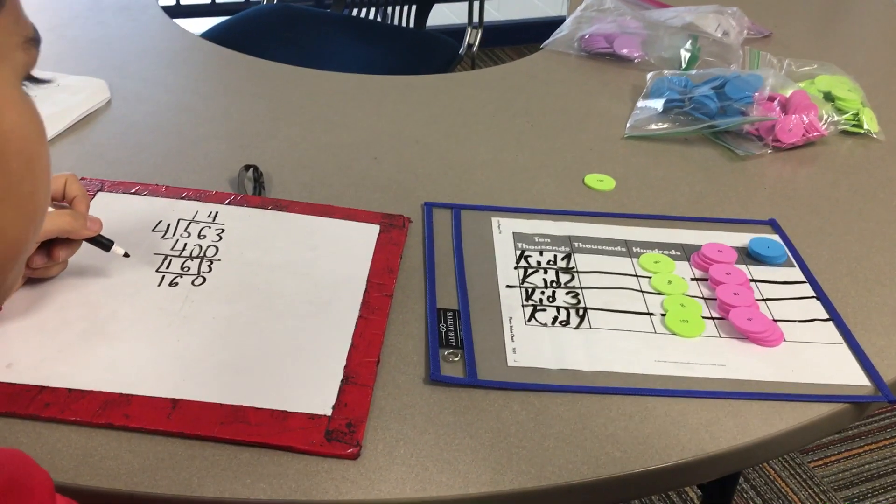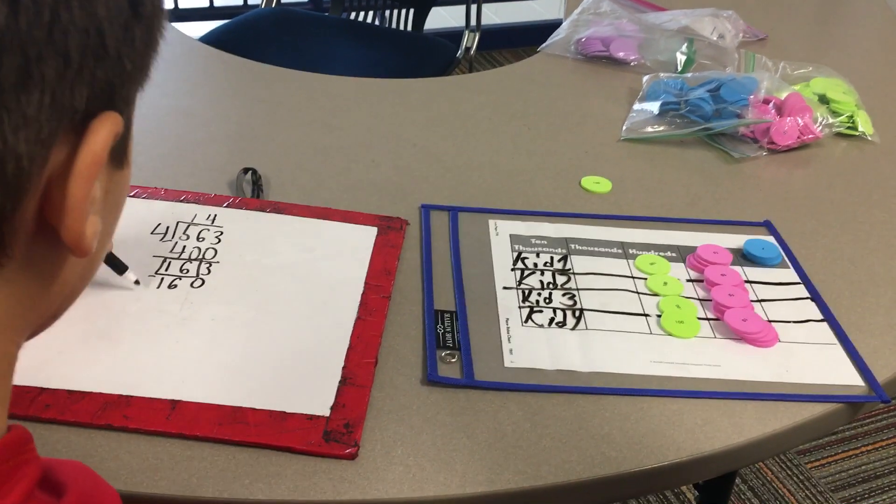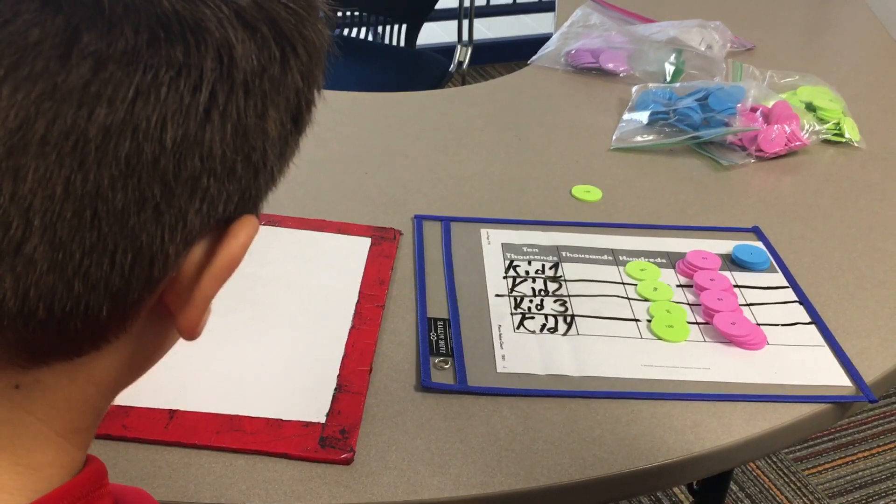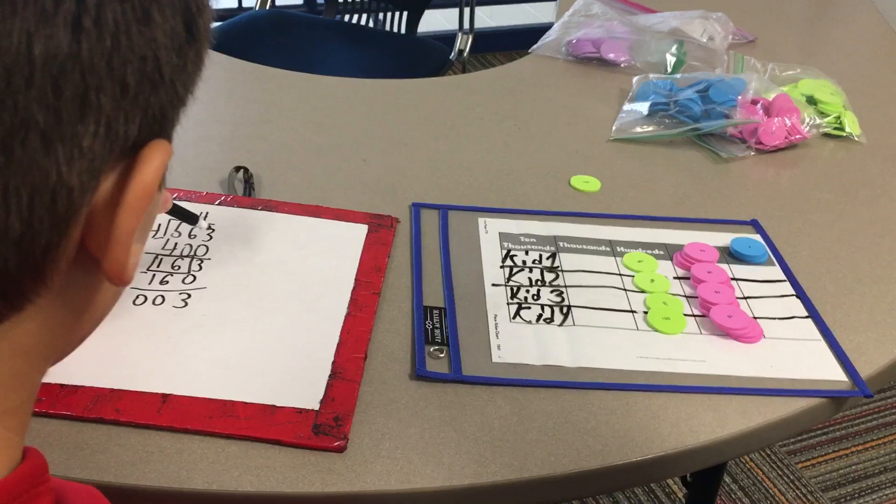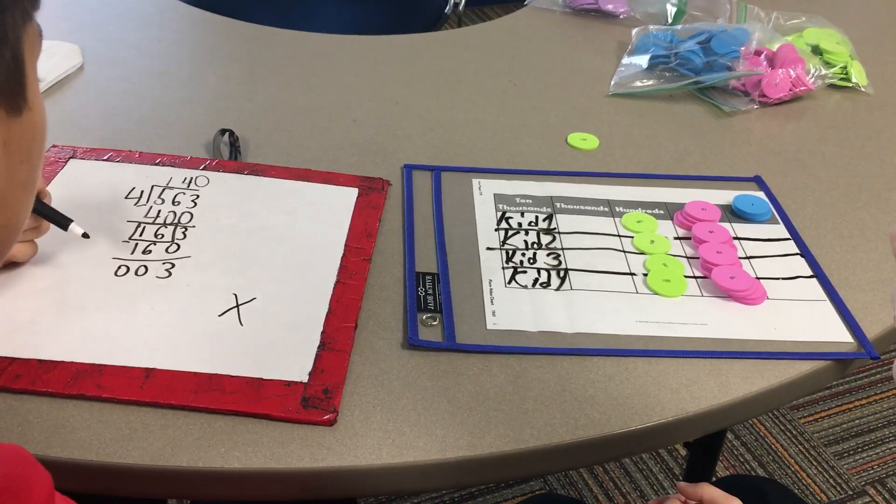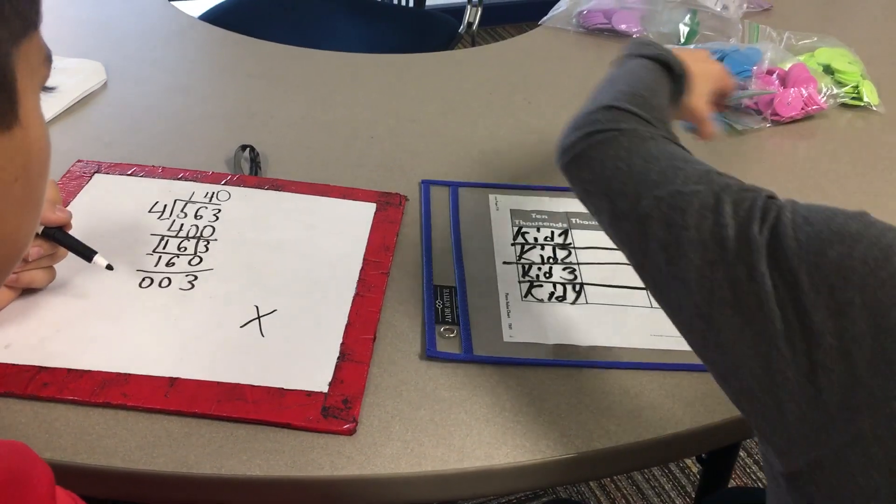Now it's time to pass out the ones. There are 3 ones, but there are 4 kids. That's not enough, so we can't give the kids any. Each kid is going to get zero ones. I passed out zero ones.